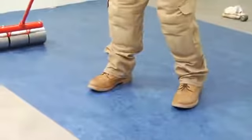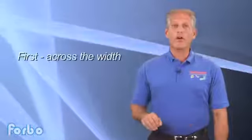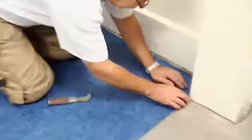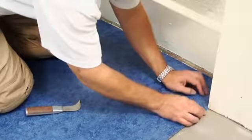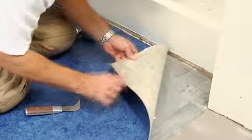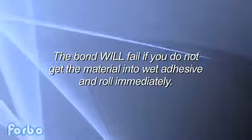Once the sheets are placed in the adhesive, roll immediately with a 100-pound roller, rolling first across the width of the material and then rolling down the length. Always check for proper adhesive transfer. You must have complete wet transfer from the back of the sheet to the subfloor. The bond will fail if you do not get the material into wet adhesive and rolled immediately.